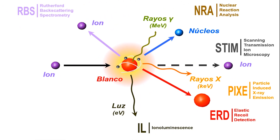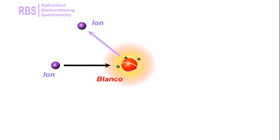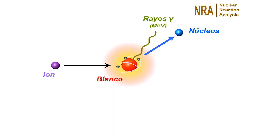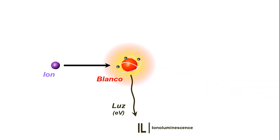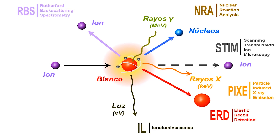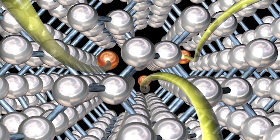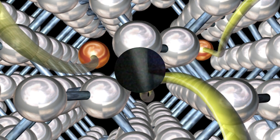Al conjunto de técnicas que nos permiten analizar los materiales por medio de los iones lo llamamos técnicas IBA, del inglés Ion Beam Analysis. Podemos analizar la información por medio de iones rebotados, los iones que arrancamos, también podemos detectar núcleos y rayos gamma producidos en reacciones nucleares, los rayos X emitidos por electrones excitados, e incluso la luz visible que emiten ciertos materiales. Además, también se puede realizar microscopía con los iones que se transmiten a través de la muestra. Aparte de estos métodos de análisis, es posible modificar las propiedades físicas de los materiales introduciendo nuevas especies que cambian su composición, permitiendo alterar a voluntad su comportamiento eléctrico, magnético u óptico.